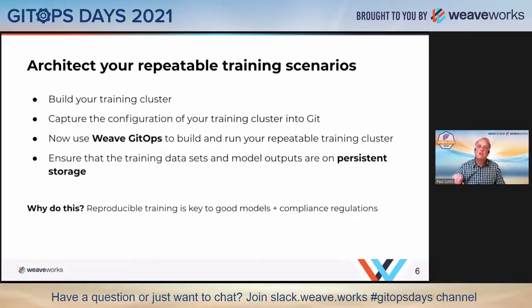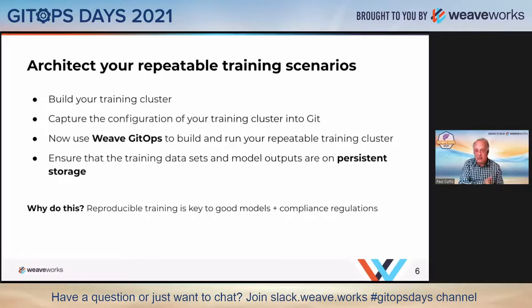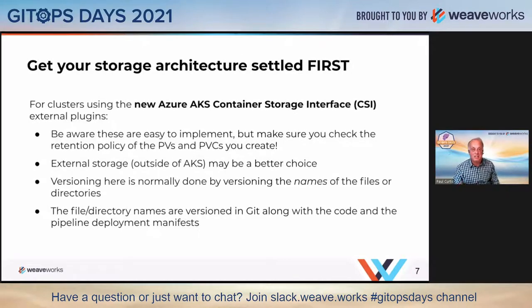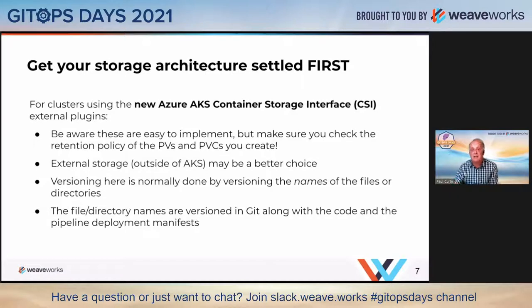Reproducible models mean that if you keep changing things and tweaking and it's not getting better, you can always go backwards to the last version that worked well. It also means that at any given moment in time, you can say this set of models, data, training, parameters, and features were used for this model, and you are compliant because you can reproduce it. It also makes training clusters reproducible and ephemeral — but to do that, to make an on-demand training cluster, you have to solve the storage problem first.